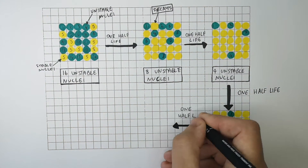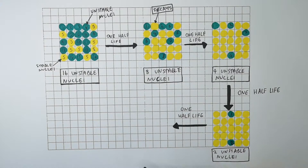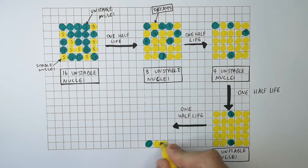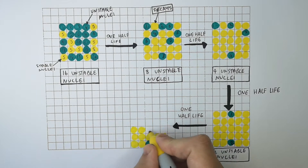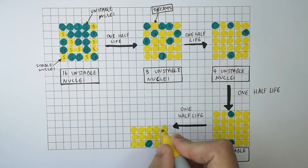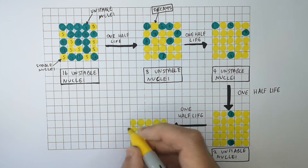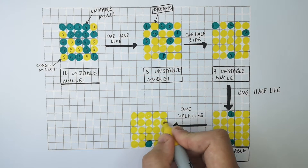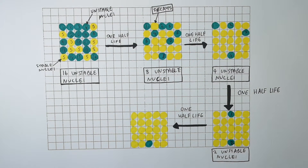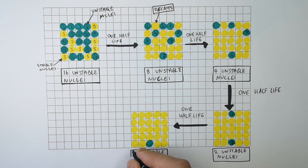Then we go from 2 radioactive unstable nuclei to 1 radioactive unstable nucleus, because one half-life is the time taken for a radioactive sample's activity to decrease by half. As you can see, this sample now has 1 unstable nucleus in it.